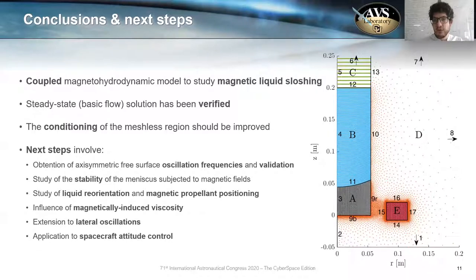Our next steps involve solving the oscillation problem, or the linearized oscillation problem, which is computing the oscillation frequencies of the system and validating them with measurements collected by our team in the past at ZARM's drop tower. We also want to study the stability of a magnetic meniscus subjected to different loads. And this is very important to ensure that we can actually hold our liquid in space.